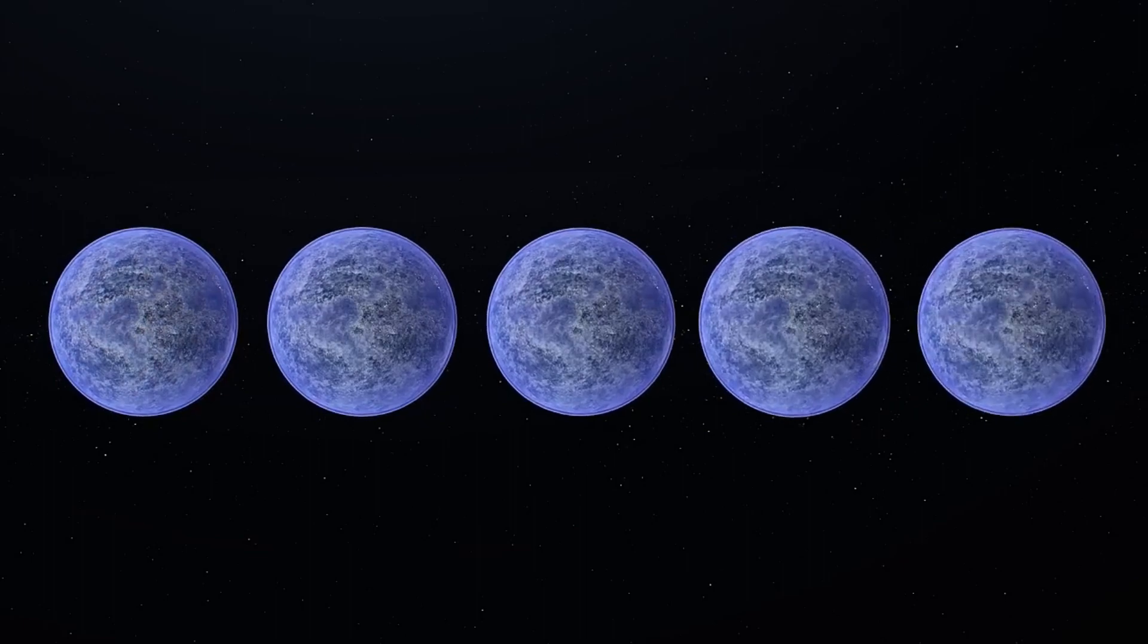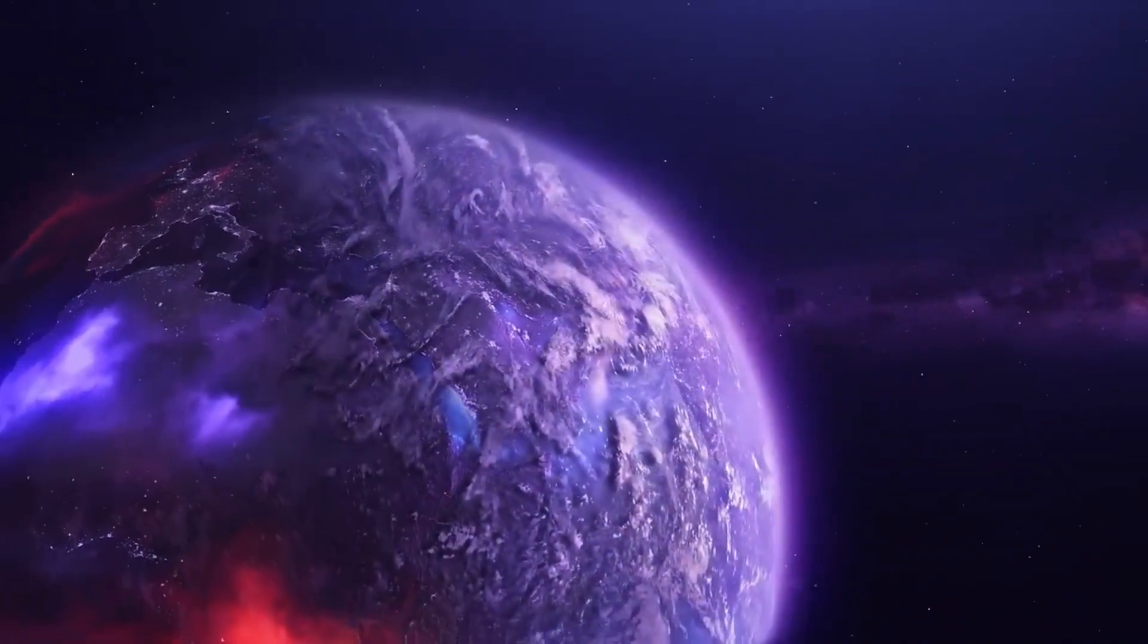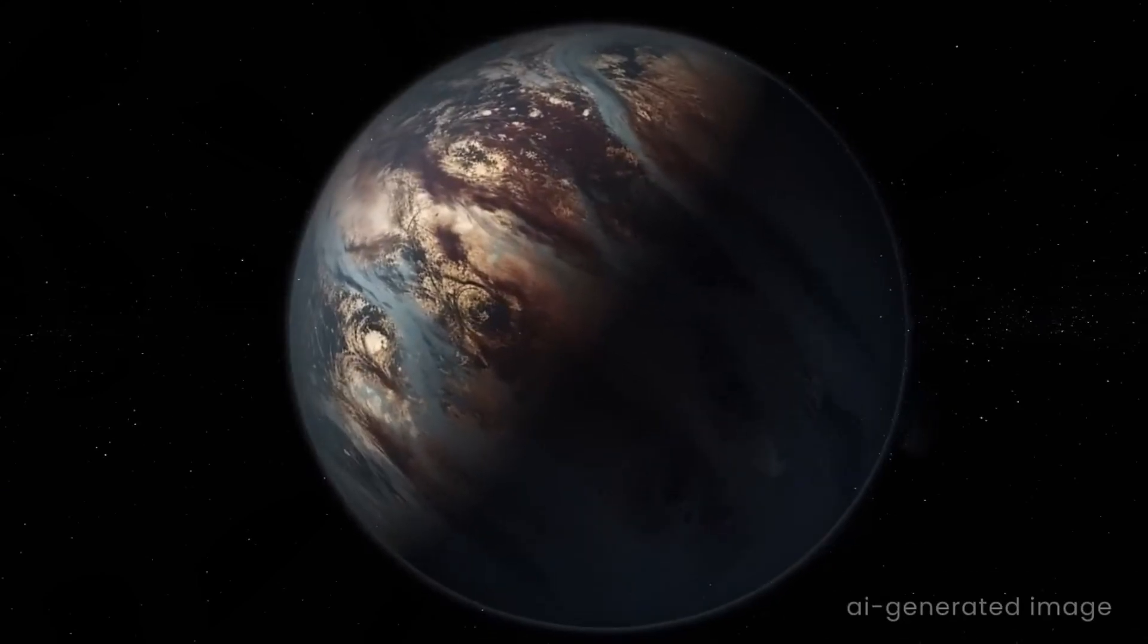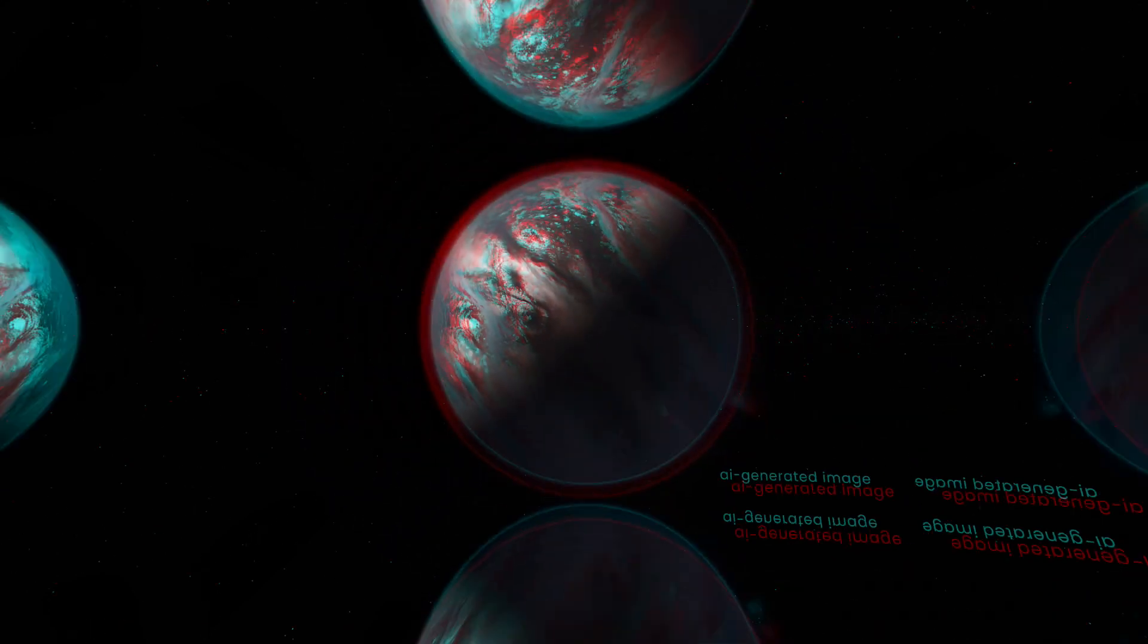One in 200 stars has habitable Earth-like planets surrounding it in the galaxy. Half a billion stars have Earth-like planets going around them. That's huge. So when we look at the night sky, it makes sense that someone is looking back at us.